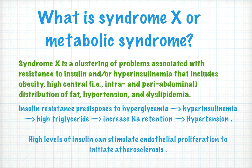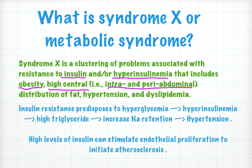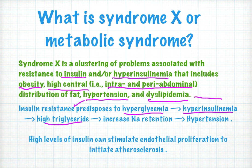Syndrome X, or metabolic syndrome, is the clustering of problems associated with resistance to insulin, thereby causing hyperinsulinemia, and also includes obesity, high central fat distribution — intra- and periabdominal — hypertension, dyslipidemia, and sometimes hyperuricemia. Insulin resistance predisposes to hyperglycemia and hyperinsulinemia, leading to hypertriglyceridemia and increased sodium retention, thereby causing hypertension.